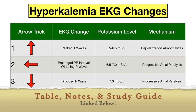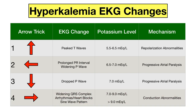At potassium levels of about 5.5 to 6.5, you might start to notice peaked T waves on EKG — remembered using the up arrow. T waves represent ventricular repolarization, and at these levels repolarization abnormalities can start to occur. As potassium levels increase to about 6.5 to 7.0, progressive atrial paralysis may start to occur, leading to prolonged PR intervals and widening of the P waves — remembered with the left arrow. The P wave and PR interval represent atrial depolarization and conduction through the atria and AV node, which is why atrial paralysis affects those components.